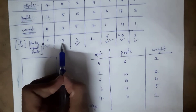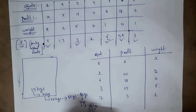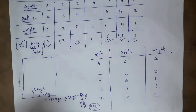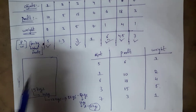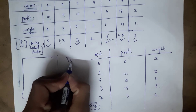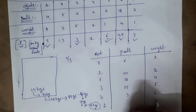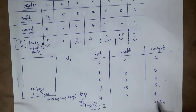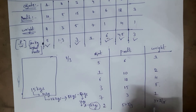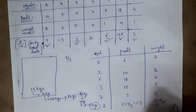Next highest profit per kg is 1.67 — object 2. However, only 2 kg capacity is left and object 2 weighs 3 kg, so I cannot place the entire object. I need to take a fraction: 2/3 of the object. Weight taken = 3 × (2/3) = 2 kg. Profit = 5 × (2/3) = 3.33 (approximately 1.3 added).